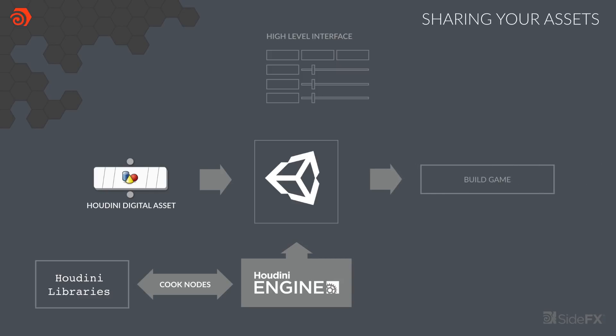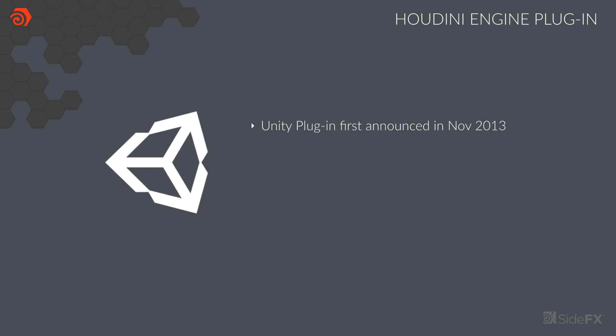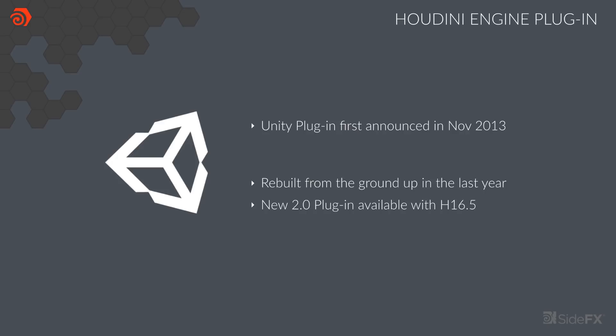When you build the game, a baked-out version of the asset will be used during gameplay. The asset is still in the editor to allow for future edits and tweaks, but its procedural nature does not carry over. The Houdini Engine is not a runtime solution, but rather a content creation engine for your editor. The Houdini Engine for Unity plugin was first announced in 2013 along with a similar plugin for Autodesk Maya. The 3D Studio Max plugin is in the works for 2018. Over the last year, SideFX has rebuilt the plugin from the ground up, and you can now access the 2.0 plugin with recent production builds of Houdini 16.5.